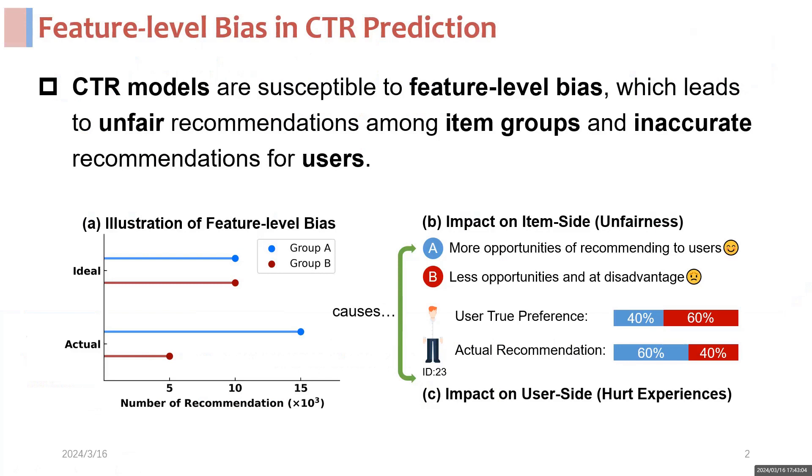However, CTR models are susceptible to feature-level bias, which leads to over or under recommendation of different item groups based on a feature field. This bias can cause unfairness among item groups and negatively impact user experience.